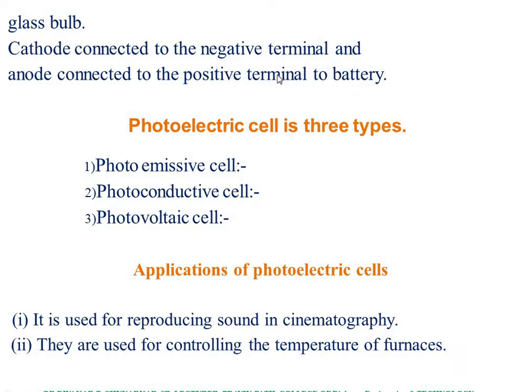The photoelectric cell is of three types: photoemissive cell, photoconductive cell, and photovoltaic cell. In the photoemissive cell, light of a particular frequency is allowed to fall on the cathode of the photocell, causing electrons to be emitted. This type of cell is called a photoemissive cell.